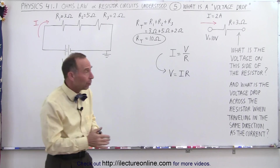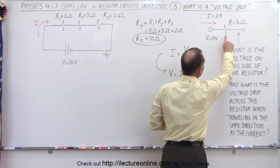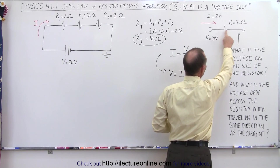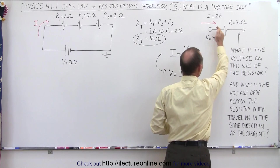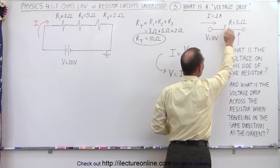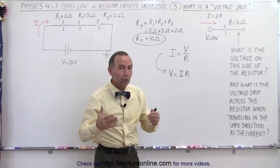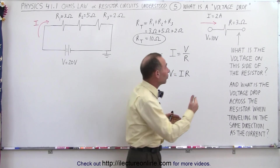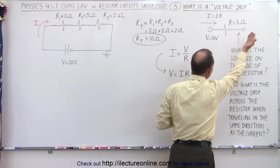When current flows through a circuit and crosses a device such as a resistor, there will be a higher voltage on the left side and a lower voltage on the right side. So the voltage drop defines what the voltage will be on the other side.